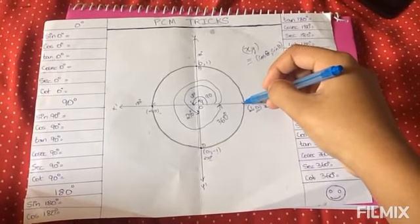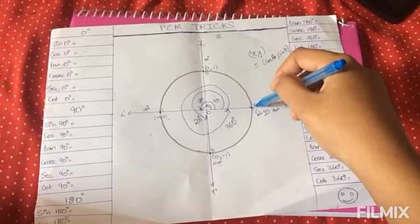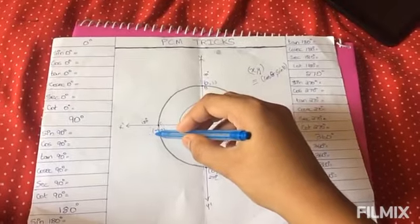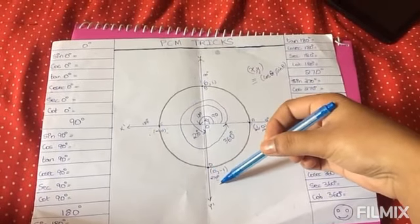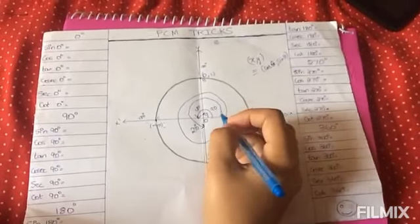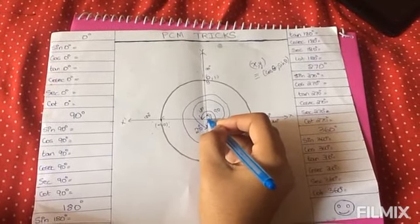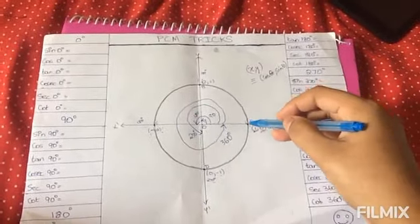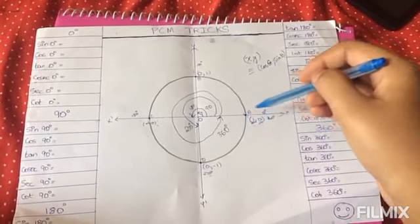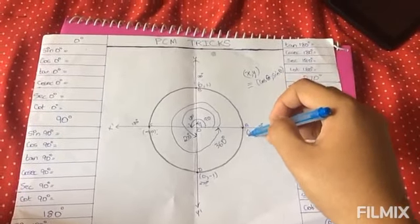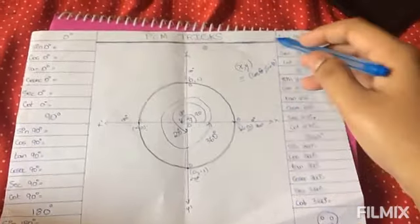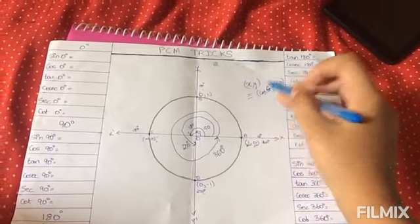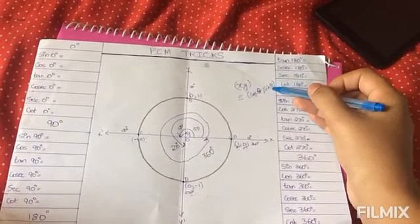At point A the value of abscissa and ordinate is 1, 0. At point B it is 0, 1. At C it is minus 1, 0, and at point D it is 0, minus 1. If the two lines overlap, the angle between those two lines will be 0 degree. There is one rule: the value of abscissa is nothing but the value of cos theta, and the value of ordinate, that is y, is nothing but the value of sin theta.